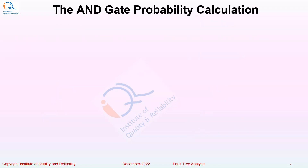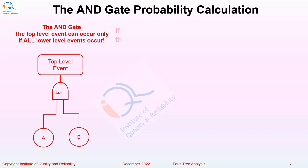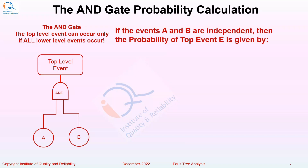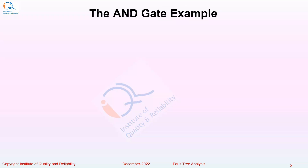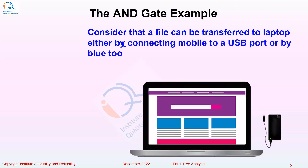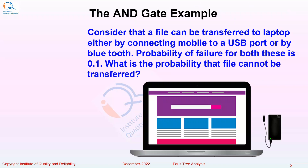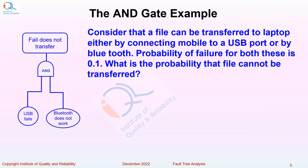Now let us see the probability calculation for the AND gate. If events A and B are independent, then the probability of top event E is given by probability of A multiplied by probability of B. For example, consider that a file can be transferred to a laptop either by connecting a mobile to a USB port or by Bluetooth. Probability of failure for both is 0.1. The probability that the file cannot be transferred is 0.1 × 0.1 = 0.01.